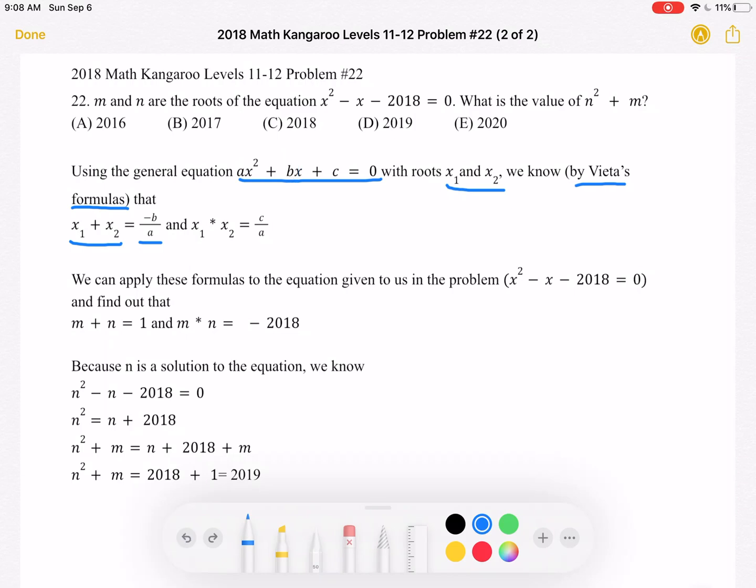And the product of the roots, x₁ times x₂, is equal to c over a. So c over a.